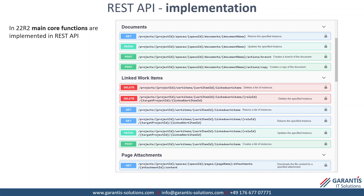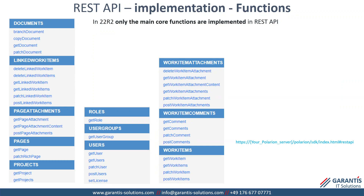Regarding REST API implementation: only main core functions are implemented in the latest release 22R2. They are documented very well. There are endpoints for documents, linked book items, and page attachments. Different types of requests are available: GET, PATCH, POST, and DELETE — the normal REST API variety. We need to wait until 2023 when more functions will be developed. The existing functionality covers documents, linked book items, page attachments, pages, projects, roles, users, book item attachments, book item comments, and book items themselves. You can always get help using the link to your Polarian server at /polarian/sdk/index.html#REST-API.